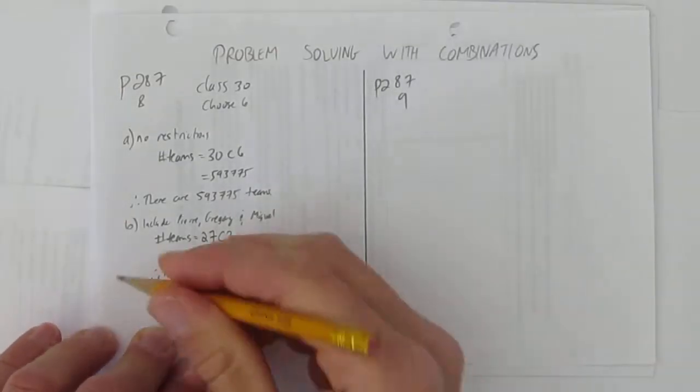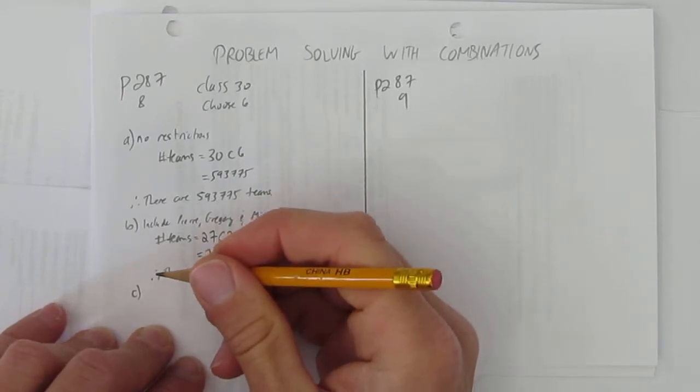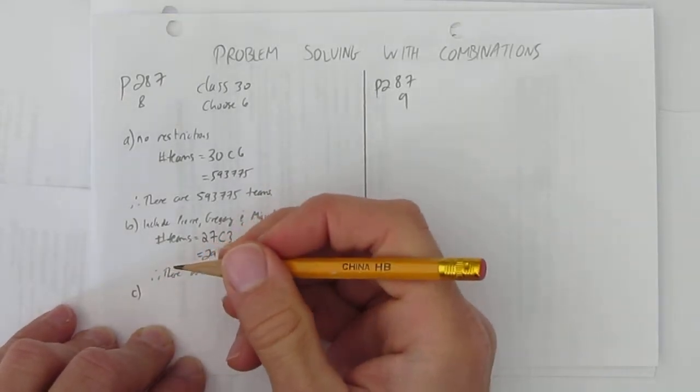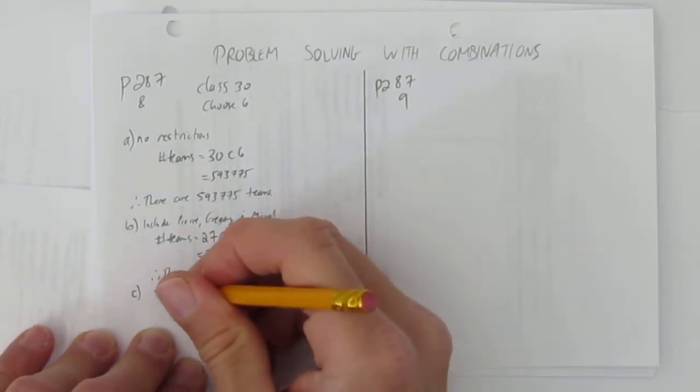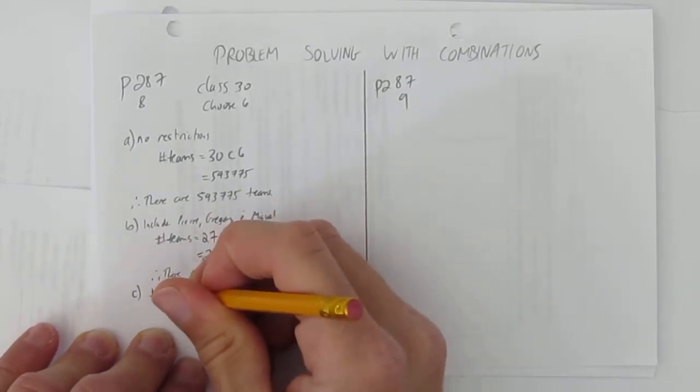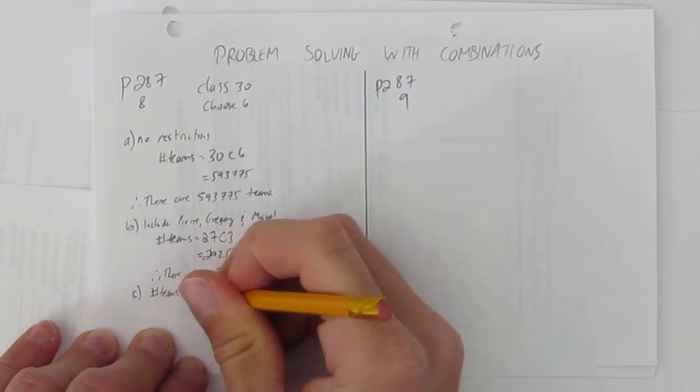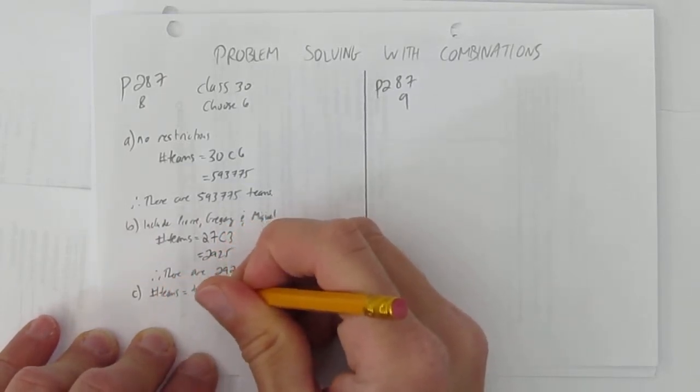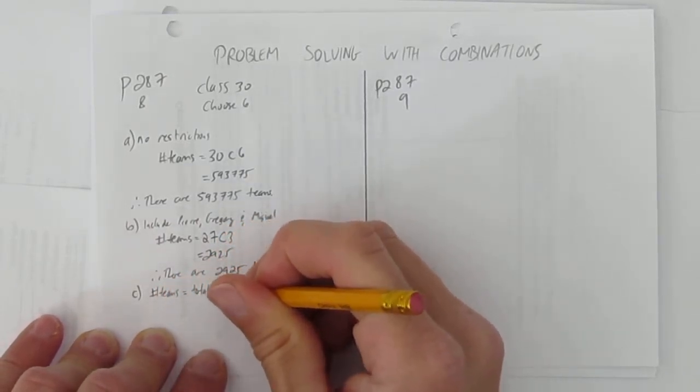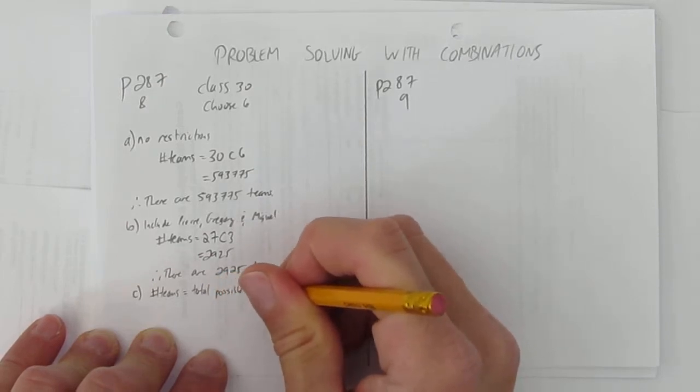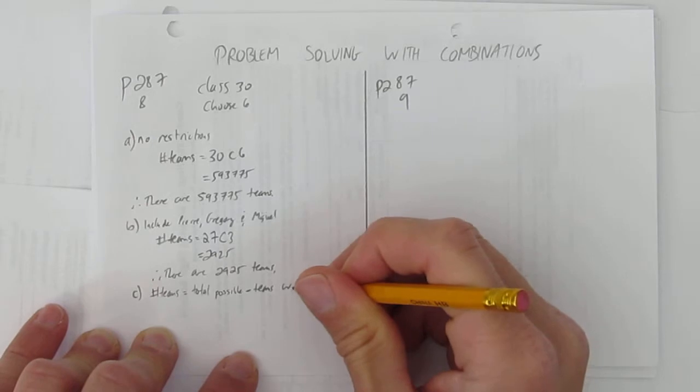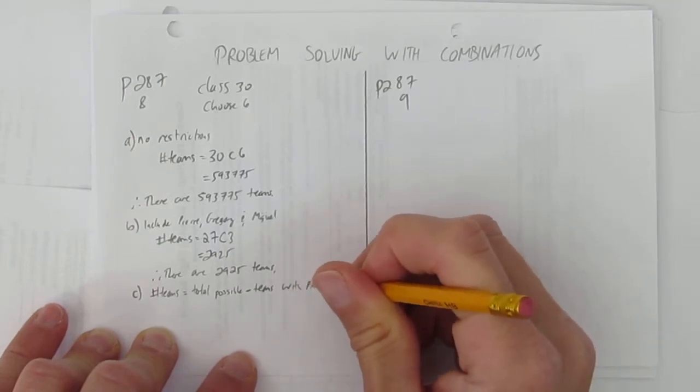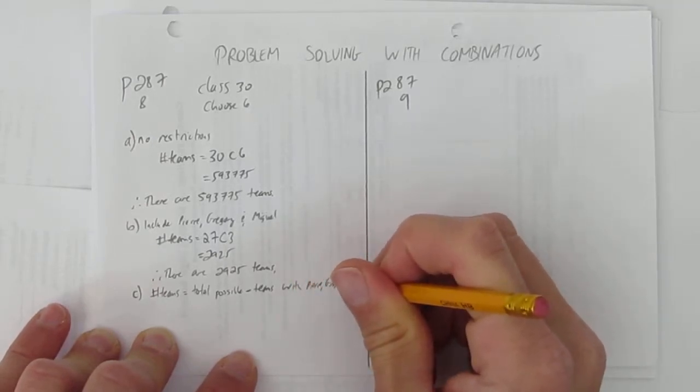Part C, same situation except this time. How many teams would not include Pierre, Gregory, and Miguel? The easiest way to do this is just say the number of teams equals the total possible minus the teams with Pierre, Gregory, and Miguel.